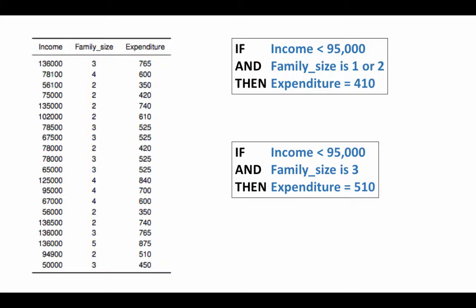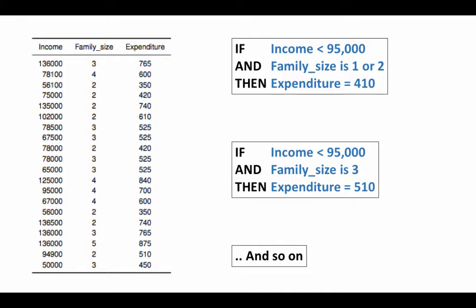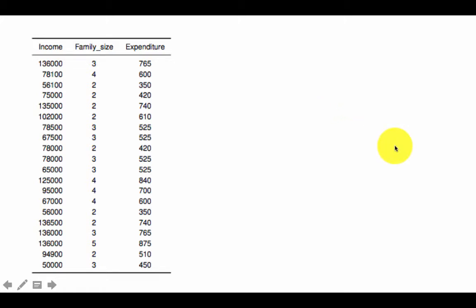We can use these rules to make predictions for new cases. For example, if a new case has an income of eighty thousand and a family size of one, the rule predicts an expenditure of four hundred and ten dollars. The whole process of finding these rules is what the regression tree method does, just as we did for classification. Given a dataset we may identify many such rules.